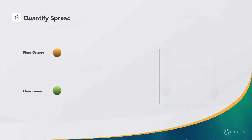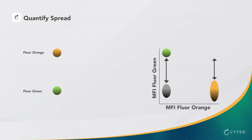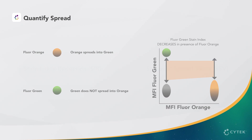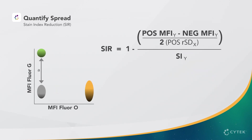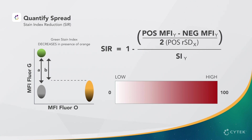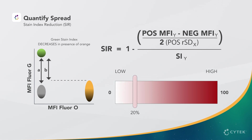Let's use an example with two generic dyes, orange and green. When stained together, orange spreads into green, but green does not spread into orange. With SIR, we measure the reduction in the stain index of green when orange is used in the same assay. The readout for SIR is between 0 and 100%, indicating the relative amount of reduction in the stain index for a given fluorochrome when used in combination with others. For example, a SIR of 20% would indicate a low amount of spread, while a value of 80% would have a greater impact on the data. The stain index reduction is a very useful tool when considering fluorochrome choices in panel design.